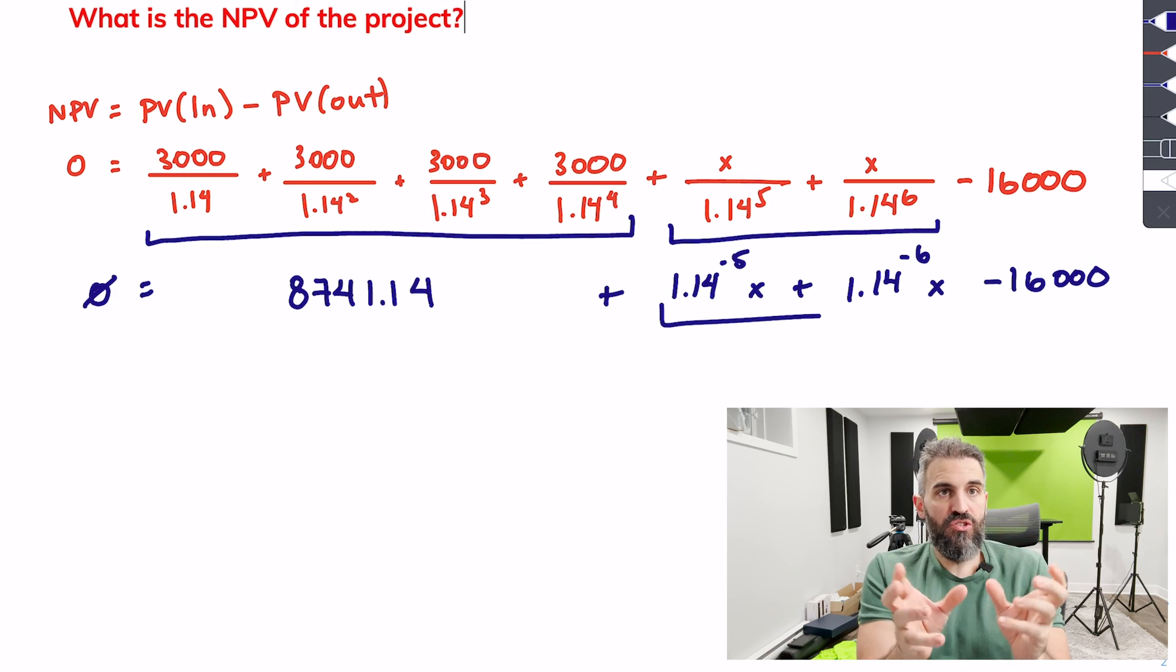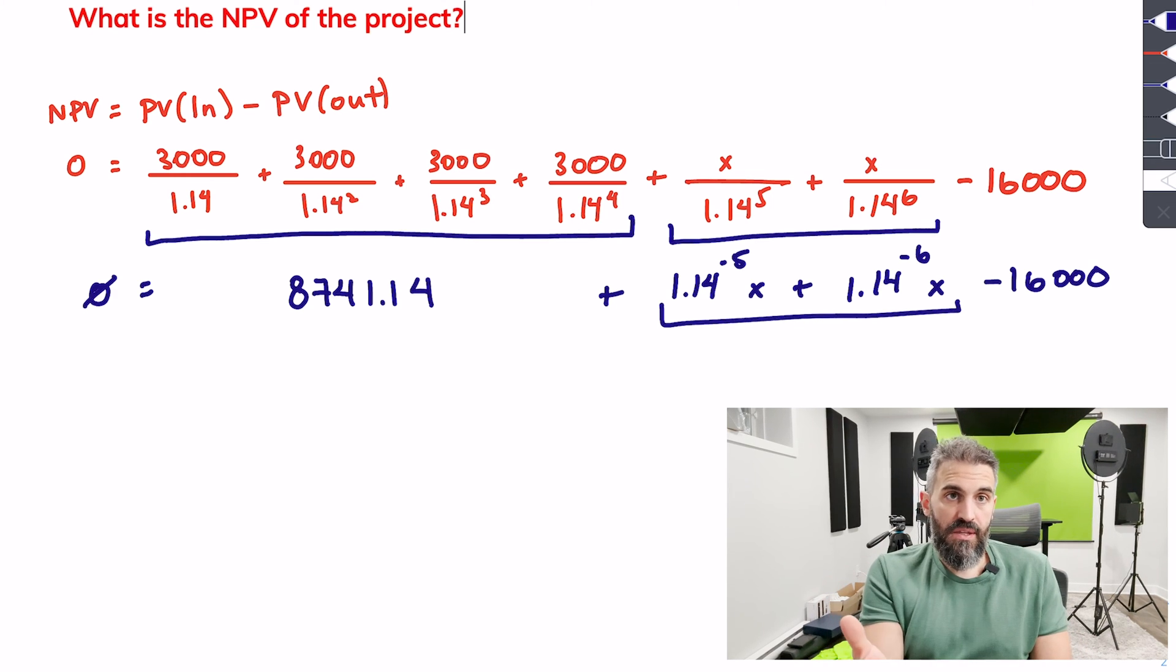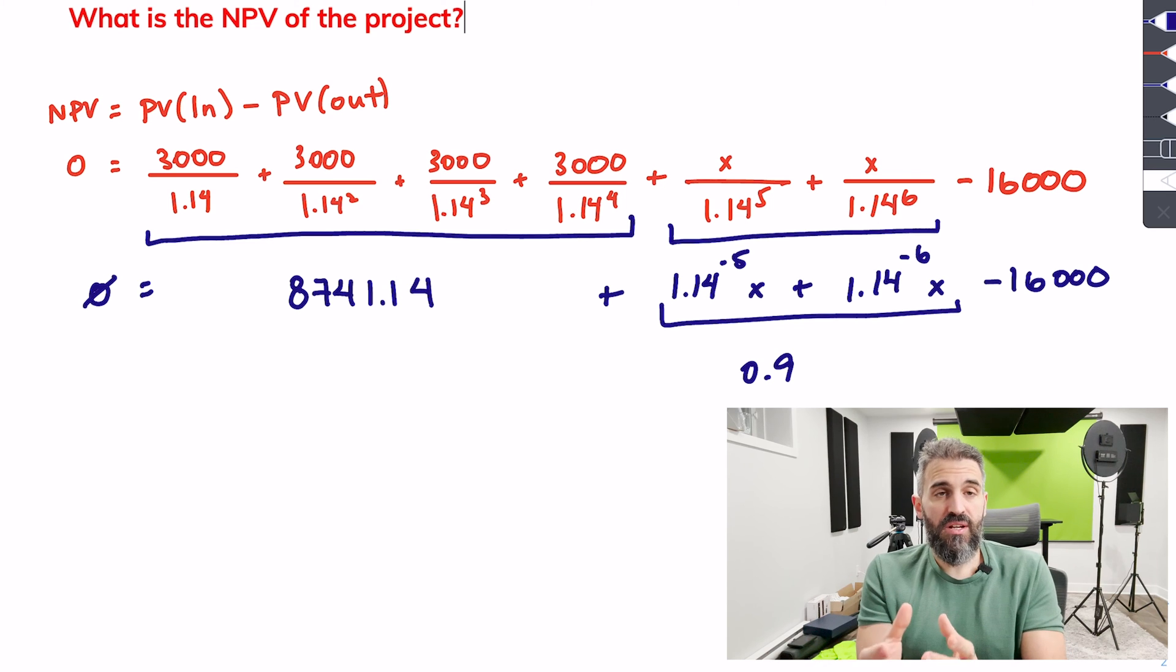That way, I can just punch that into my calculator, and you'll see in the next part of the video that I do that. I punch it into the calculator and I end up with a decimal number.